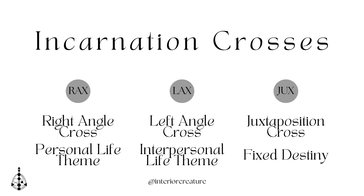Juxtaposition crosses are the most rare type of incarnation cross. Also referred to as a fixed destiny cross, they're only going to be present for people who have a 4-1 profile. They are really a deep dive into one gate. Instead of having those big four thematically linked gates — from your conscious sun, unconscious sun, conscious earth, and unconscious earth — working in tandem, typically the conscious sun's gate is the big theme that all other placements in your chart support. Think of it as a very narrow, focused deep dive into one thing, with everything else in the chart supporting that.